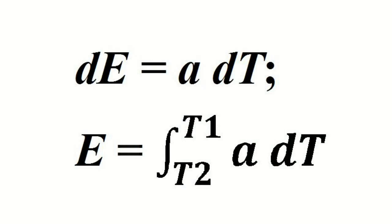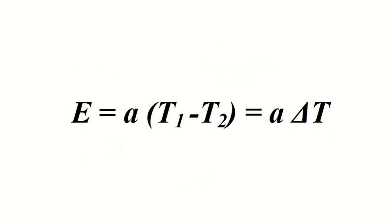Within a small temperature range, the thermo-EMF value E can be considered proportional to the temperature difference of T1 and T2. That is, E equals alpha multiplied by delta T. The coefficient alpha is called the thermoelectric capacity of the couple, also called thermal force, thermo-EMF coefficient, or specific thermo-EMF. It is determined by the materials of the conductors, but it also depends on the temperature range. In some cases, with a change in temperature, alpha changes its sign.